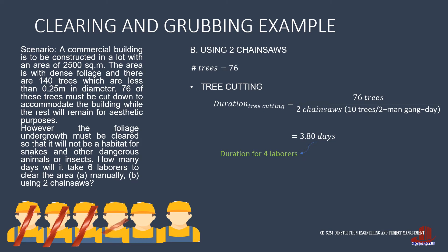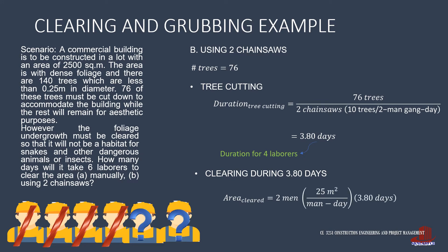Since there are six total laborers hired, what are the remaining two workers doing? During the tree cutting, the two remaining laborers started clearing. The area that they cleared during 3.8 days of tree cutting is computed as two men times each individual's output of 25 square meters per man per day during 3.8 days, and they have cleared 190 square meters.